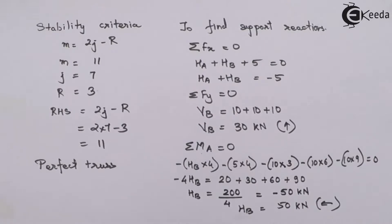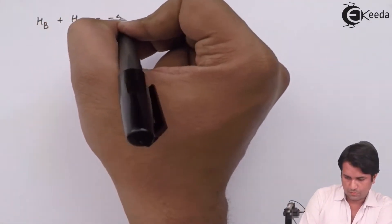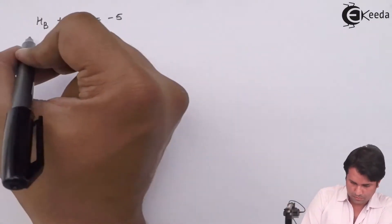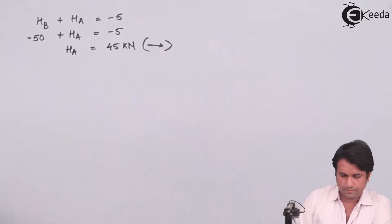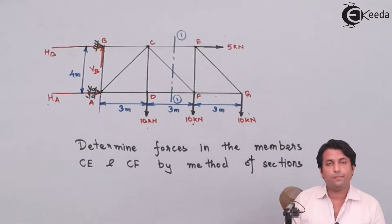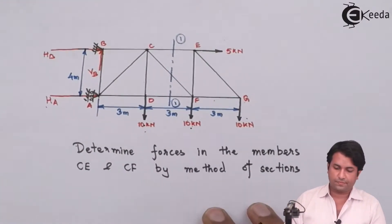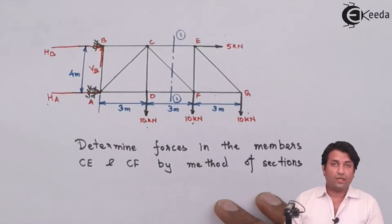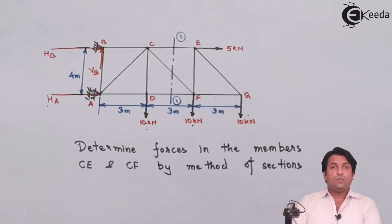Once I have this value, I put it into the equation ΣFx = 0. In this case, my assumption of HA acting towards the right is correct because the answer I am getting is positive. I have now calculated the support reactions and checked for stability.